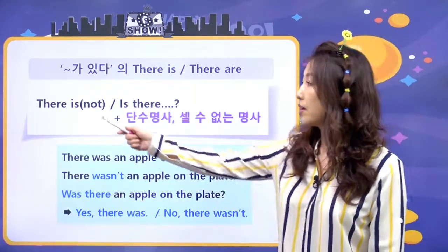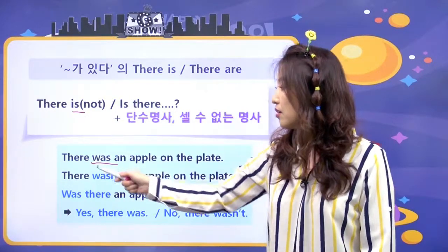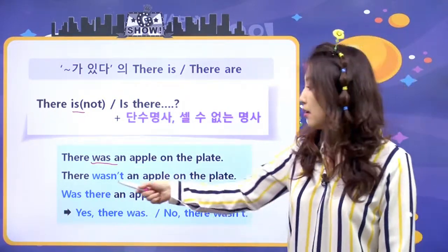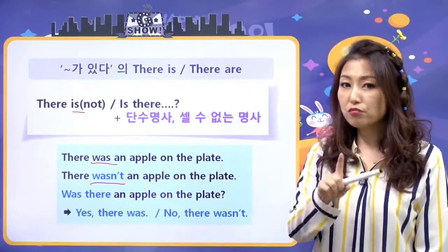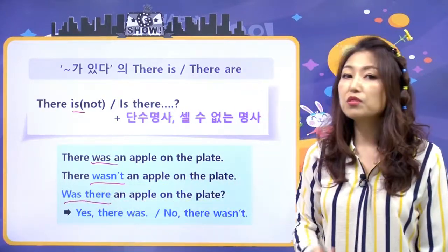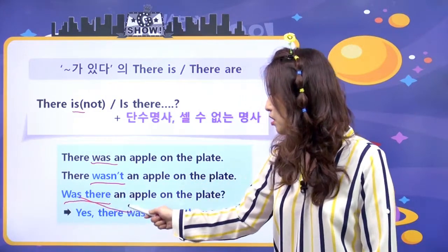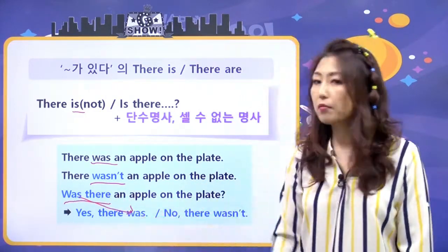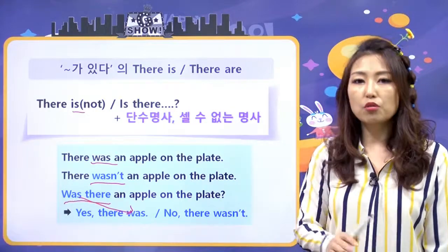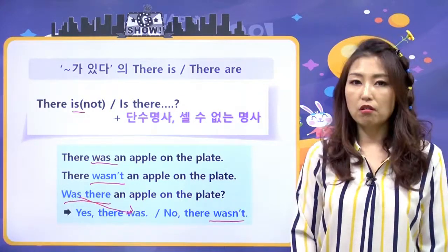과거일 경우에는 'there is'가 'was'가 되겠죠. 'There was an apple on the plate', 'There wasn't', 'Was there'로 의문문 할 수 있고, 답도 was로 물어봤으니 was로 답하면 되는 거예요. 'Yes, there was.' / 'No, there wasn't.' 이렇게 답하면 돼요.